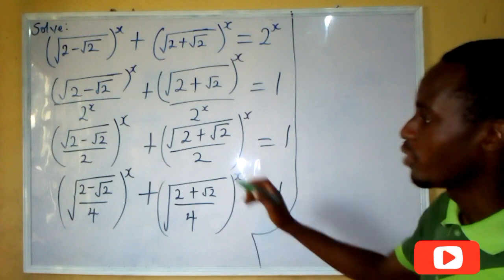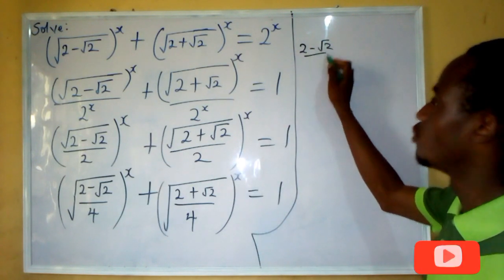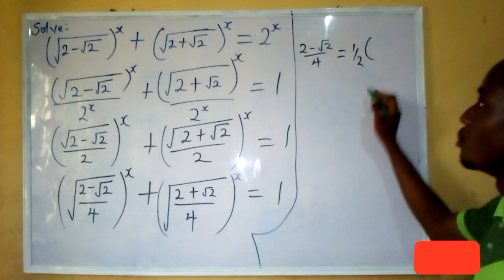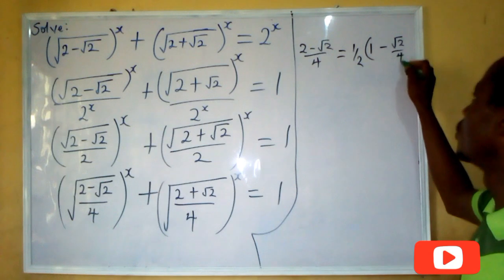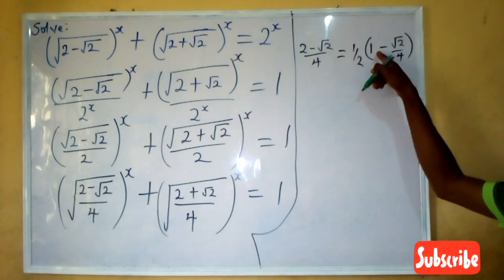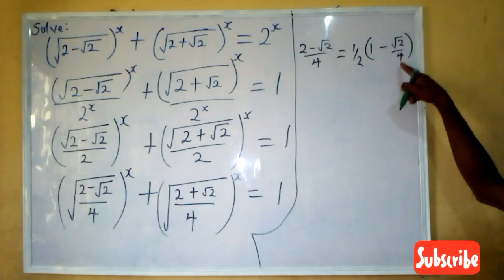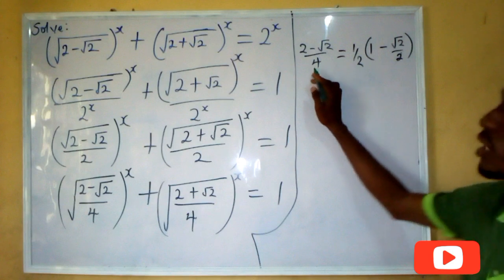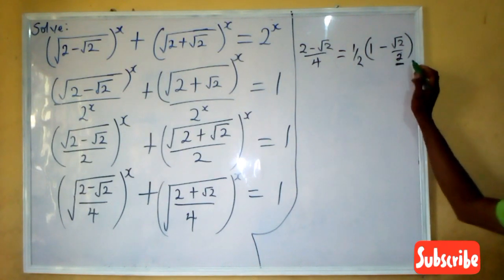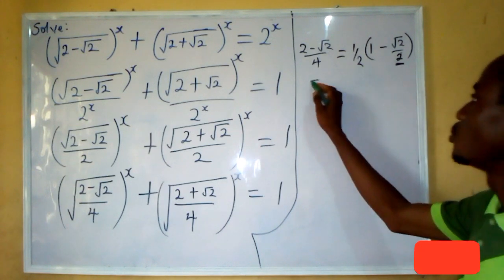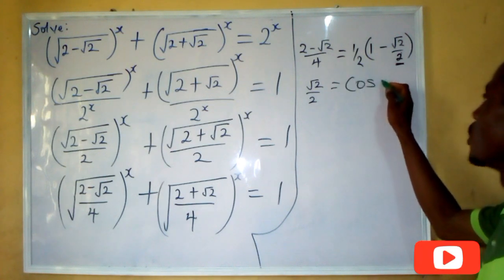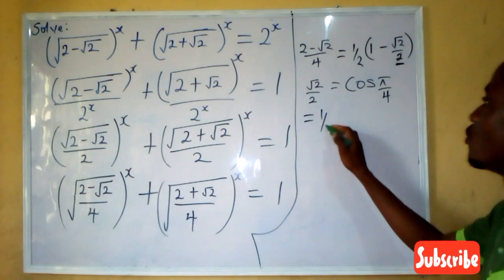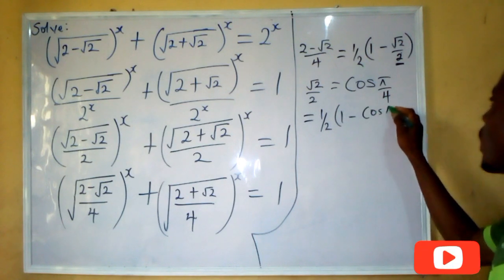The next line of action is to treat and simplify the expression. If I bring out 2 minus root 2, all over 4, I can write it in the form of 1 over 2 into bracket 1 minus root 2 all over 2. Opening the bracket, I get 1 over 2 minus root 2 all over 4. Now, this number looks like a trigonometric number — root 2 all over 2 is the same thing as cos(π/4). So I'm going to have this equal to 1 over 2 into 1 minus cos(π/4).